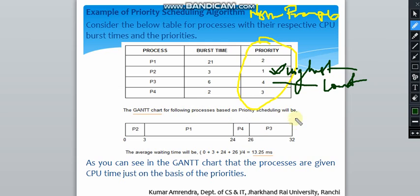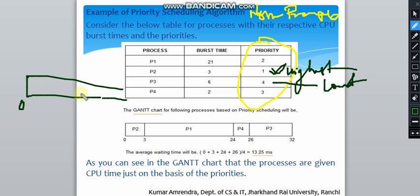All processes arrive at time 0. The process with the highest priority is executed first. We create a Gantt chart starting from 0 — the highest priority job is P2 with priority 1, so we give the CPU to P2. P2 runs for 3 milliseconds. After P2 finishes, the next highest priority process is P1.